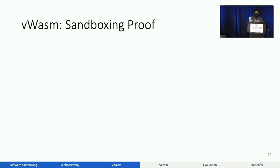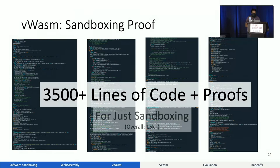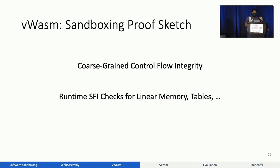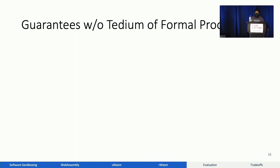What does a proof of such a theorem look like? It's about 3,500 lines of code and proof, and this is just for the sandboxing pass. To set up the infrastructure and the environment and get all the way to compilable, runnable code, it took about 15,000 lines of code. Clearly, this takes a lot of effort. At a high level, we first start off with coarse-grained control flow integrity, which allows us to introduce runtime software fault isolation checks that cannot be bypassed. With these SFI checks, we ensure that the linear memory in WebAssembly, the tables, and so on, are handled correctly, and that all accesses stay within a statically sized sandbox.